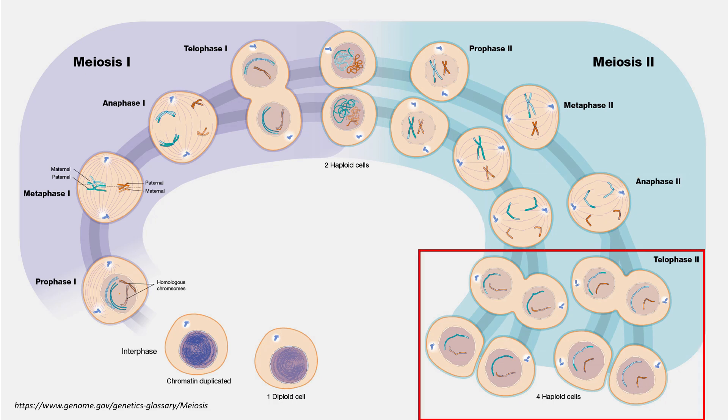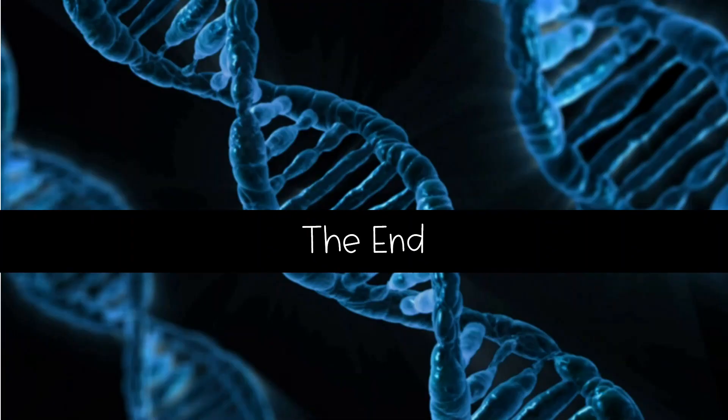In telophase II and cytokinesis, the chromatids decondense and the cytoplasm divides, resulting in four non-identical daughter cells, each carrying half the number of chromosomes as the parent. Crossing over, independent assortment, and random segregation all contribute to the genetic variation seen in sexually reproducing populations, and are fundamental in producing genetically unique sperm or egg cells. That is the end of Episode 3 — thank you for watching.